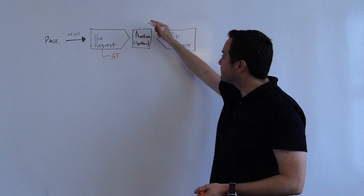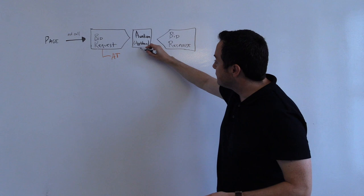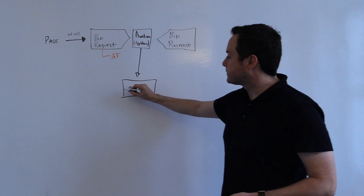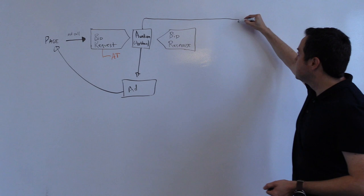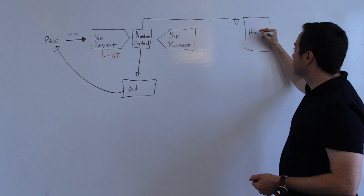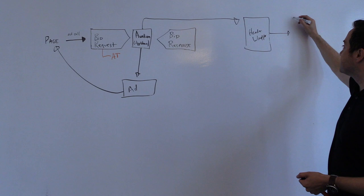So what happens next after the auction? Well, historically, the auction resulted in serving an ad directly to the page. But nowadays, with the advent of header bidding, frequently this auction actually results in simply a bid being submitted to a header wrapper that in turn passes this bid onto the publisher's ad server or some other decisioning mechanic.